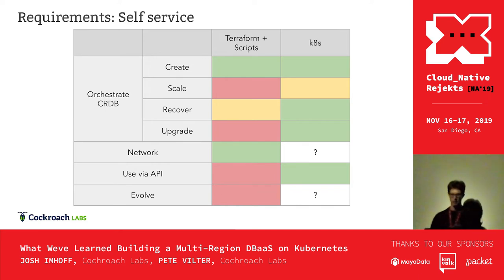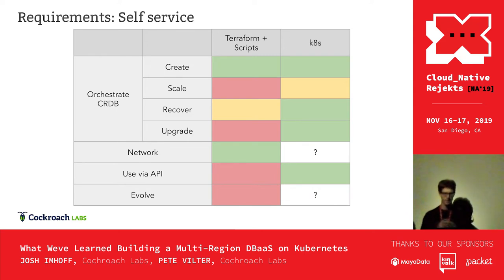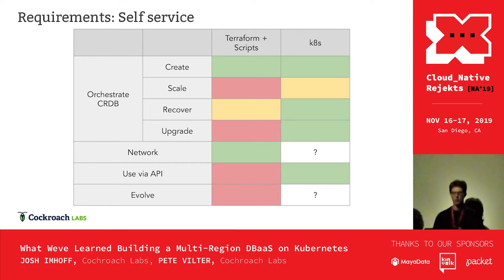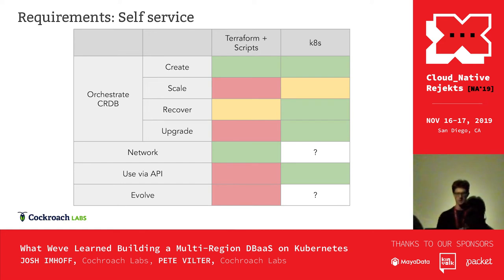Overall, Kubernetes is doing a good job. The automation stack is solid and provides a good foundation. We'll give scale a yellow but everything else green, and especially give 'use via API' green — the fact that Kubernetes provides APIs makes it really easy to build a service on top of it. The big question mark for us is the network. The reliability of the automation stack is important, but what's much more important is that the database-as-a-service works. The database must serve queries, and for it to serve queries the network has to work.